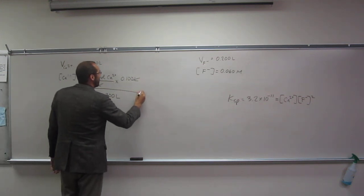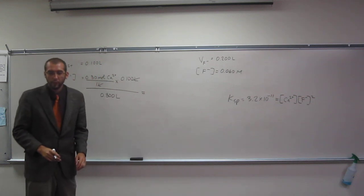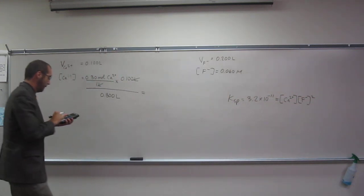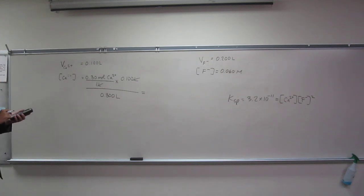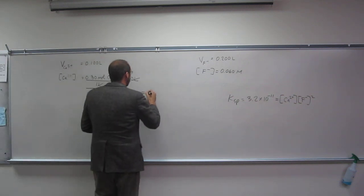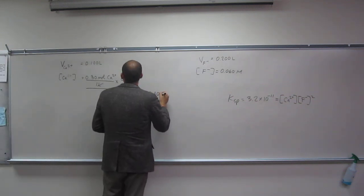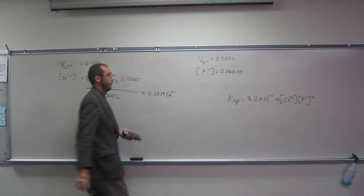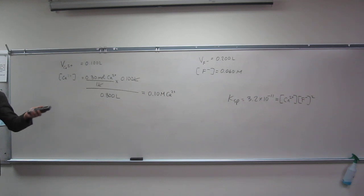If you're not okay with it, rewatch the video. So 0.3 times 0.1 divided by 0.3 gives us 0.10 molar Ca2+. Everybody get that?